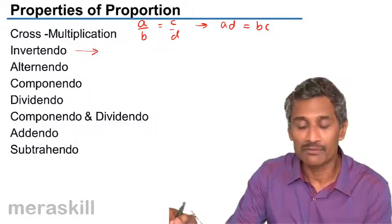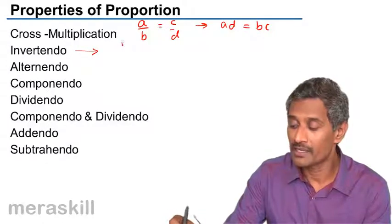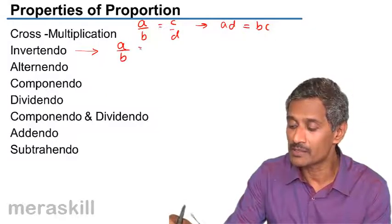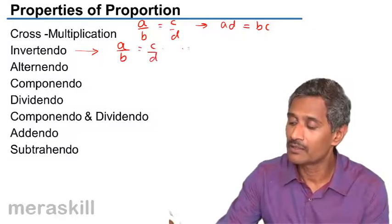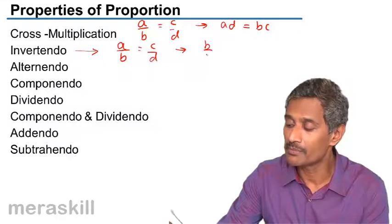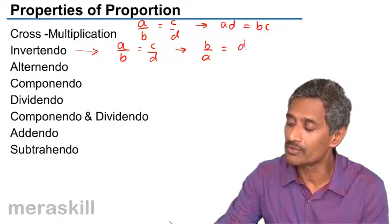And then we have the process of invertendo, which means that if A by B is equal to C by D, then it follows that B by A is also equal to D by C.